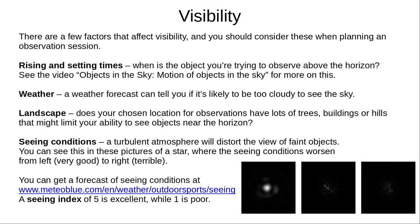Before we talk about telescopes, we should discuss factors that affect visibility when planning observations. Consider rising and setting times — there's no point trying to observe Orion in June when it's in the daytime sky. Of course, check the weather forecast; you don't want to set everything up if it's too cloudy. Check the landscape beforehand in case trees, buildings or hills block your view, particularly for objects near the horizon. And consider seeing conditions — this refers to atmospheric turbulence above you, which can distort the view of faint objects. On screen you can see a star in very good seeing conditions on the left, getting worse to the right. Use the website Meteo Blue for a forecast of seeing conditions; a seeing index of five is excellent while one is poor.